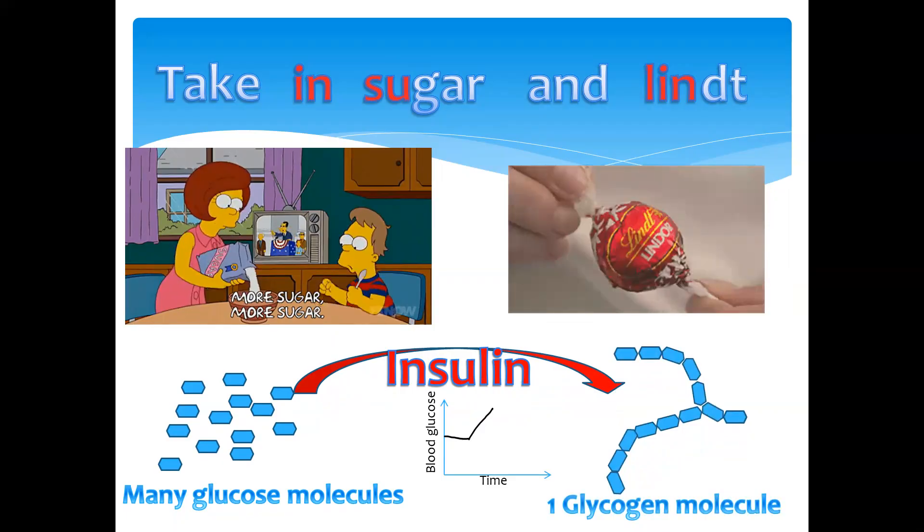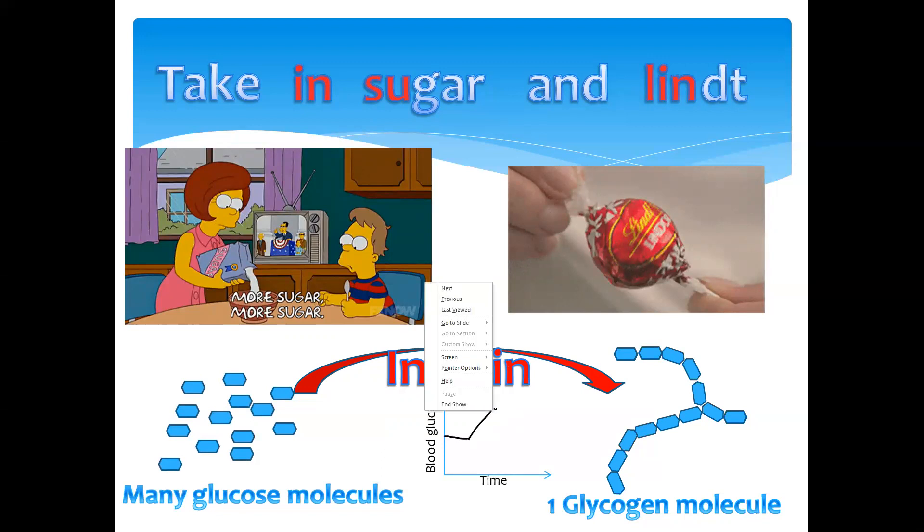Glycogen is a polysaccharide, and normally in the liver and muscle cells we're going to have the glucose being converted and stored as glycogen. As a result, the glucose level will then decrease and it will go back to the normal range.